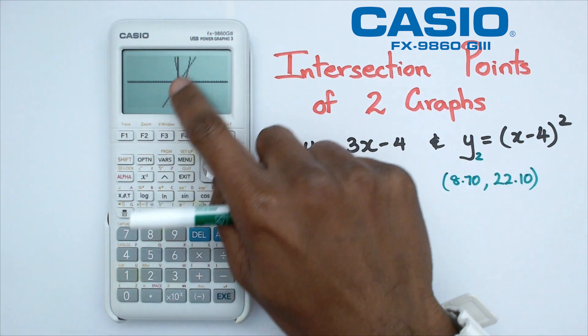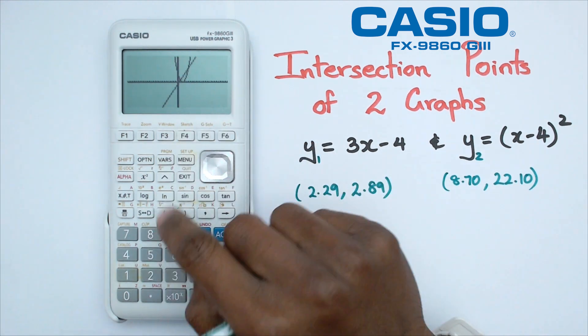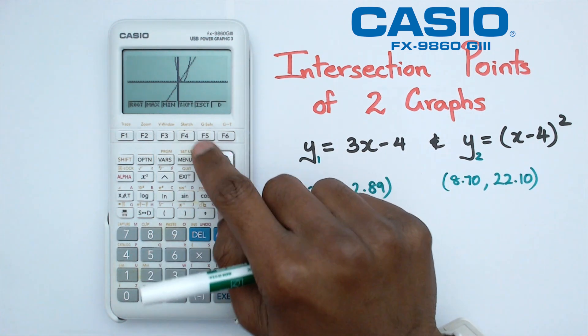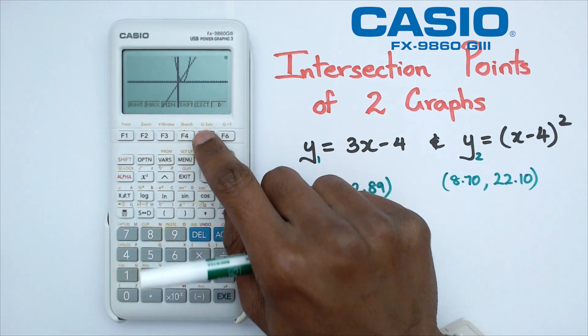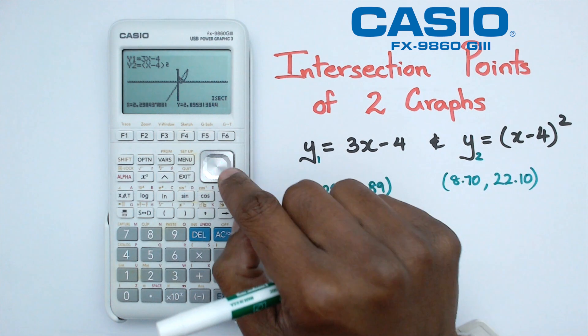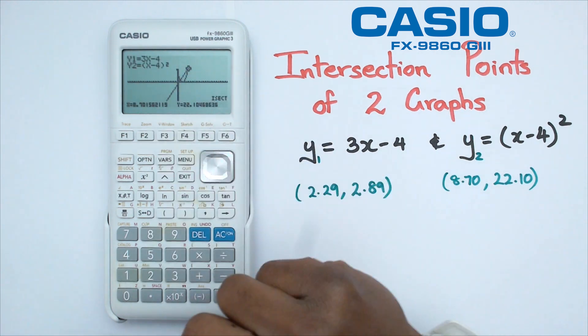And as you can see, there's those two points where the intersections are happening. So if you click on G-solve now, and F5 again for intersection point, there's your first point, and then there's that second point right there.